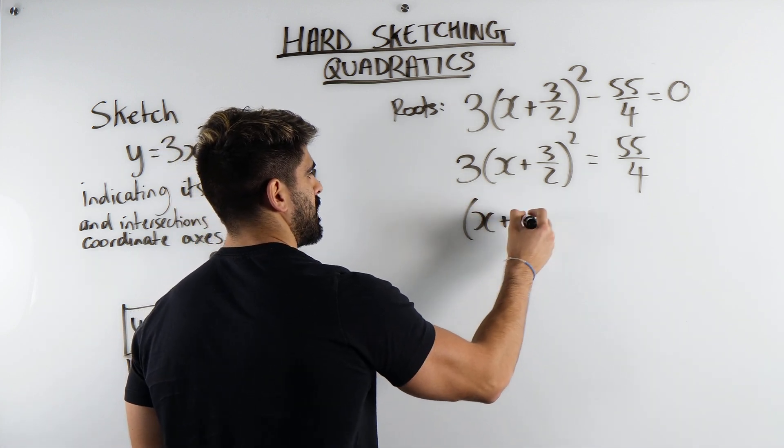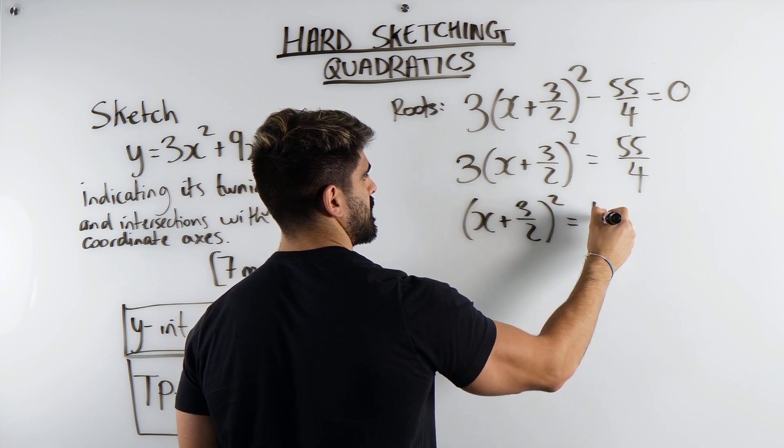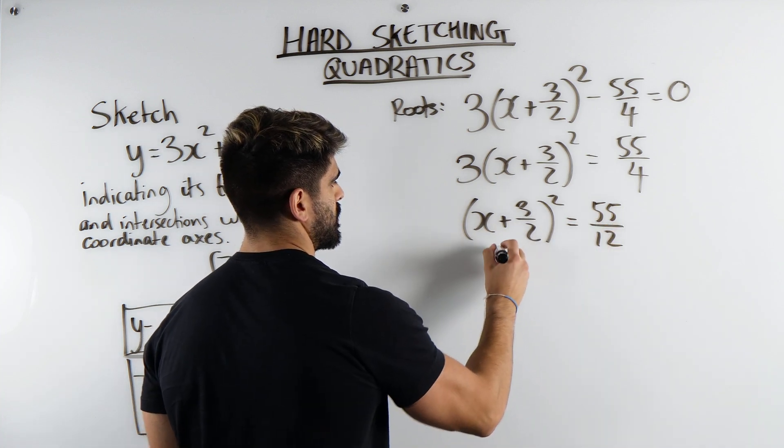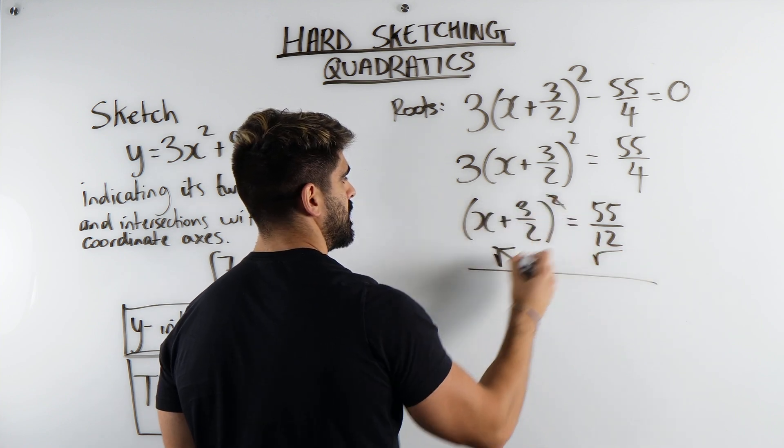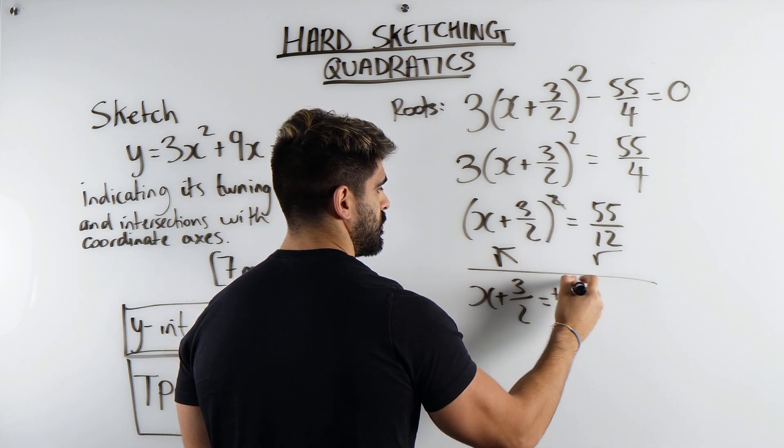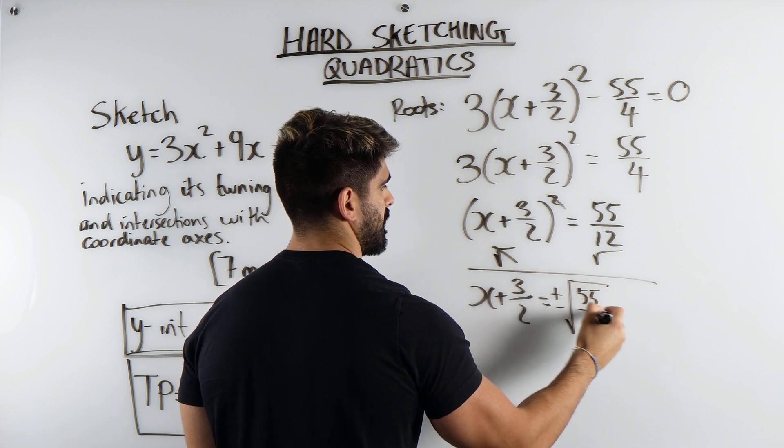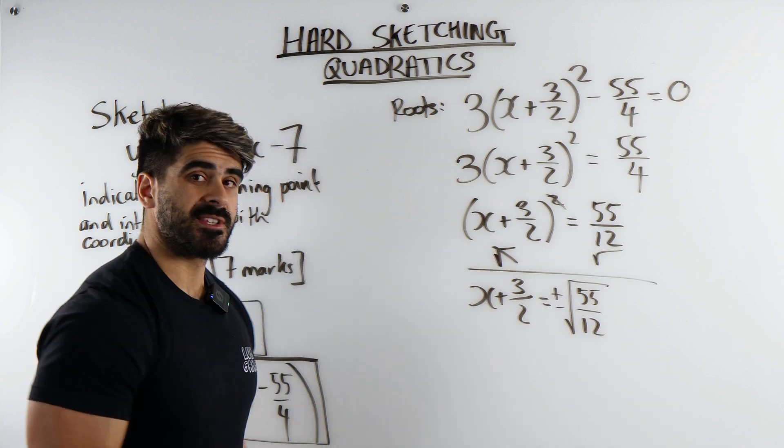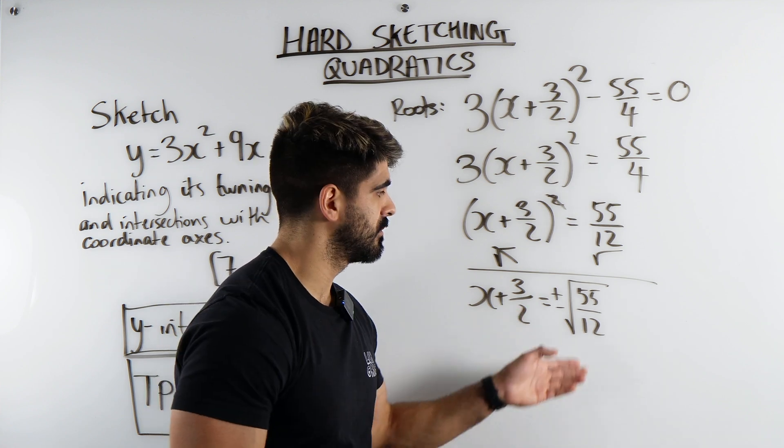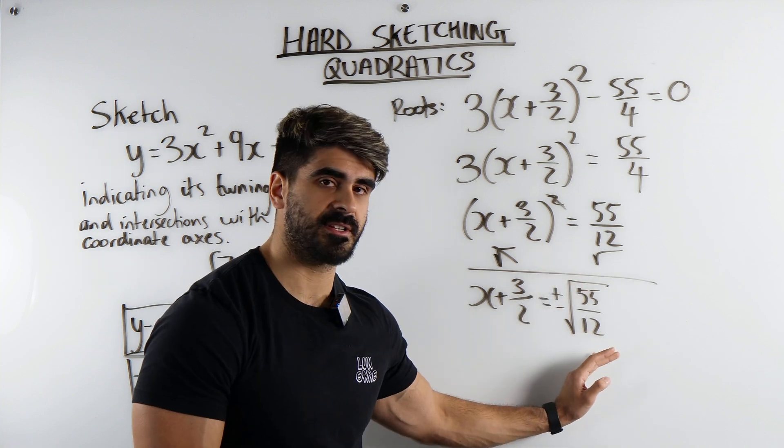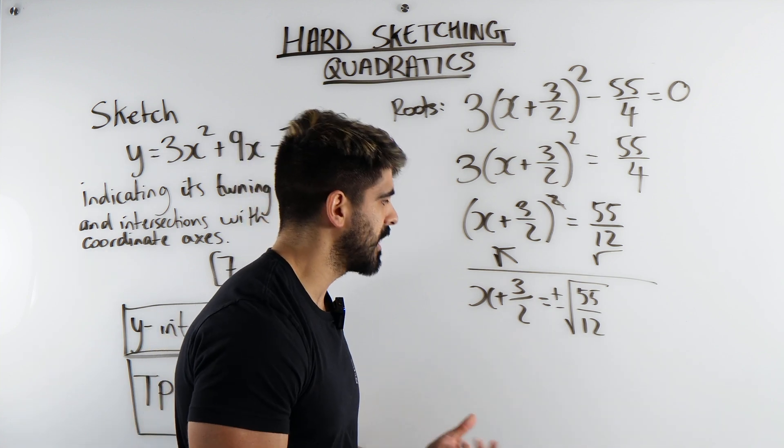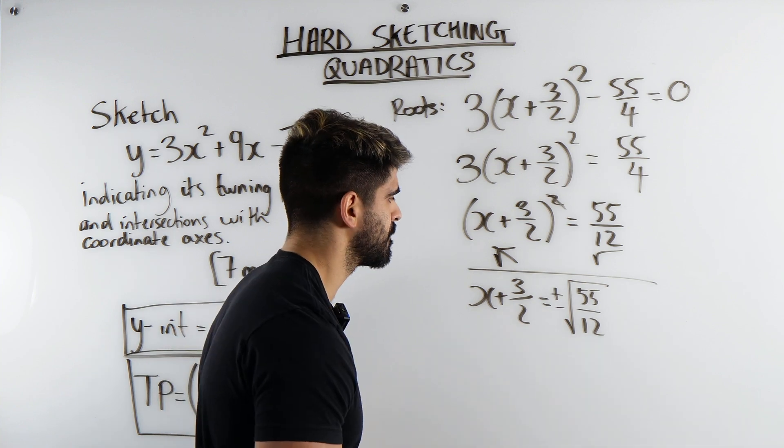So we get (x + 3/2)² = 55/12. Now we need to square root both sides. So when we square root, remember you're going to get positive and negative. So we get x + 3/2 is ±√(55/12). Now, some exams will allow you to just leave your answer like this. And I've seen many exam mark schemes. I think one of the answers was √7/2, and they just left it like that. They didn't rationalize the denominator. But I think for us, we might as well practice doing that process.